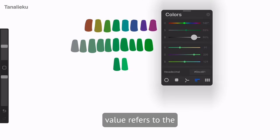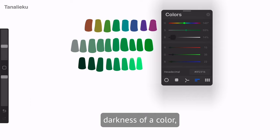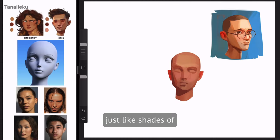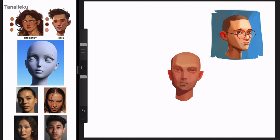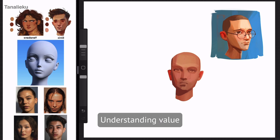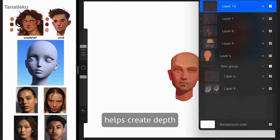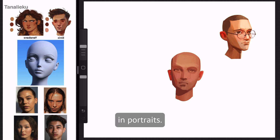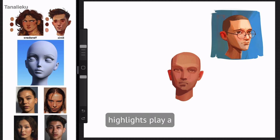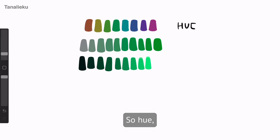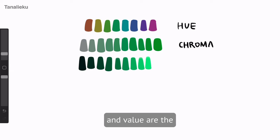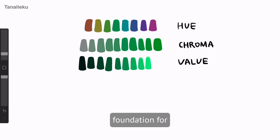Finally, value refers to the lightness or darkness of a color, just like shades of gray — white represents the lightest value and black the darkest. Understanding value helps create depth in portraits, as shadows and highlights play a crucial role in defining the contours of the face. So hue, saturation, and value are the cornerstones of color theory, forming the foundation for depicting skin tones.